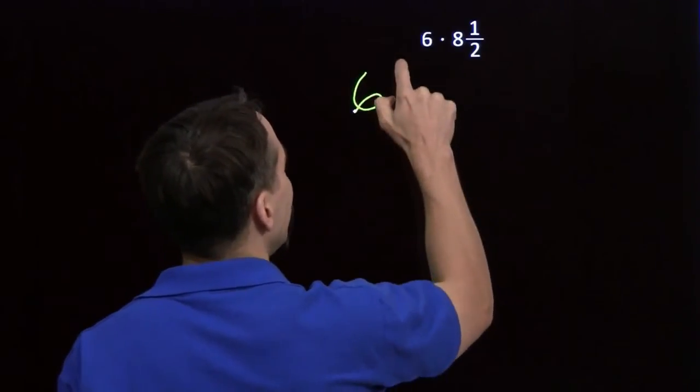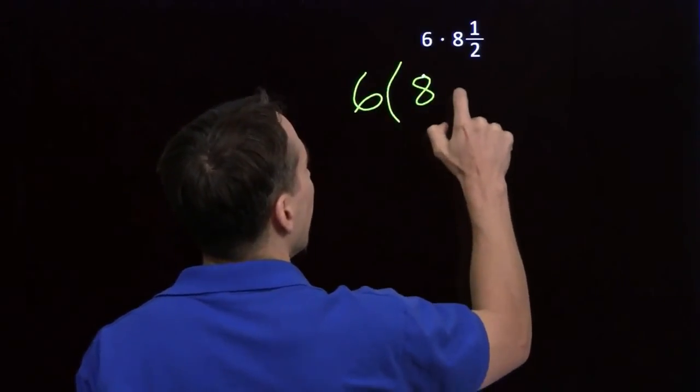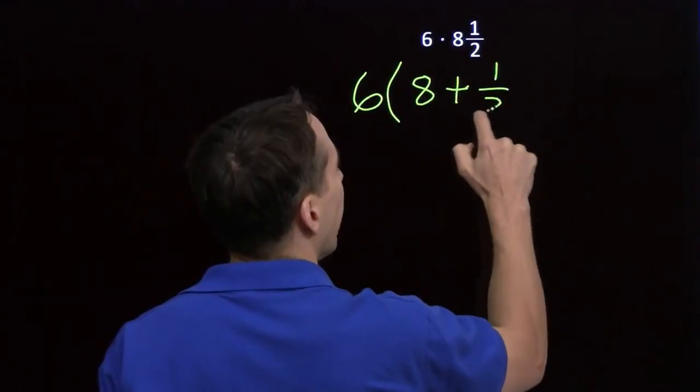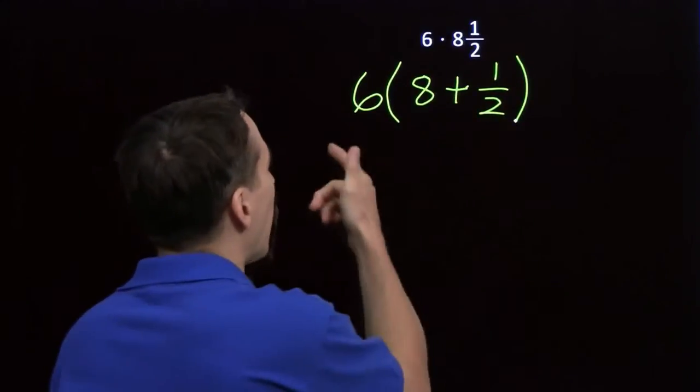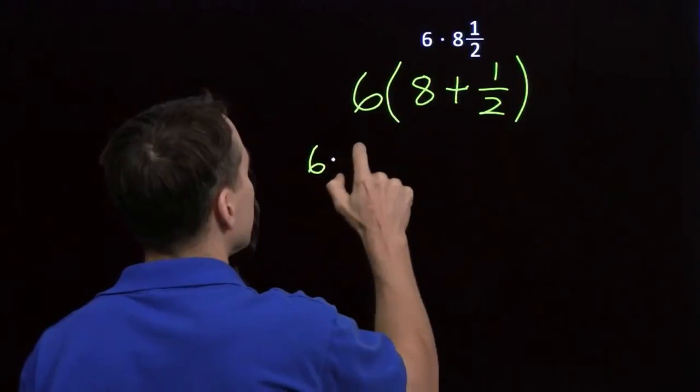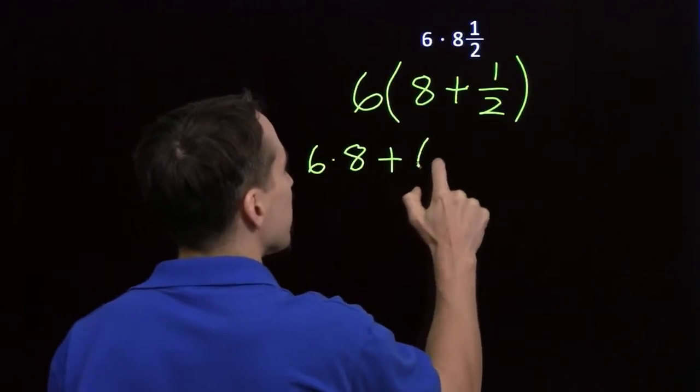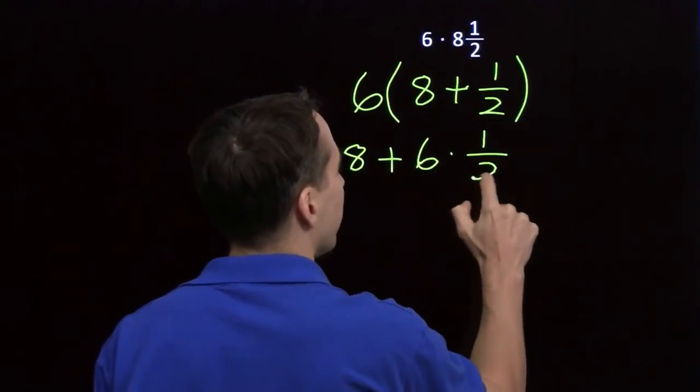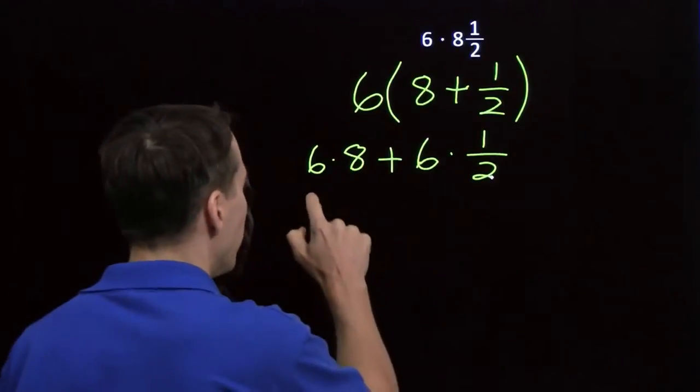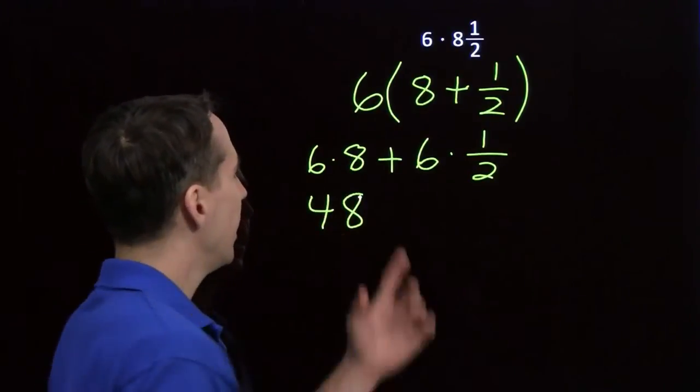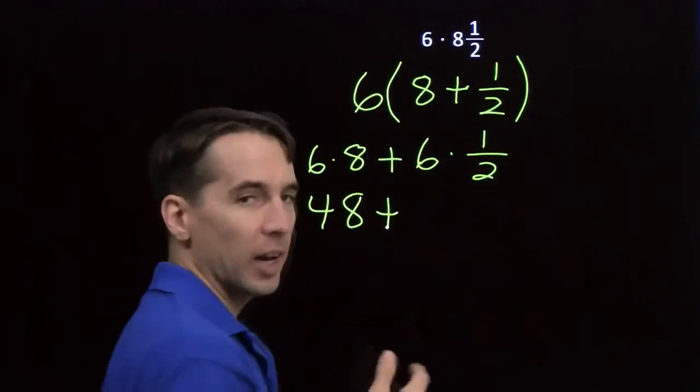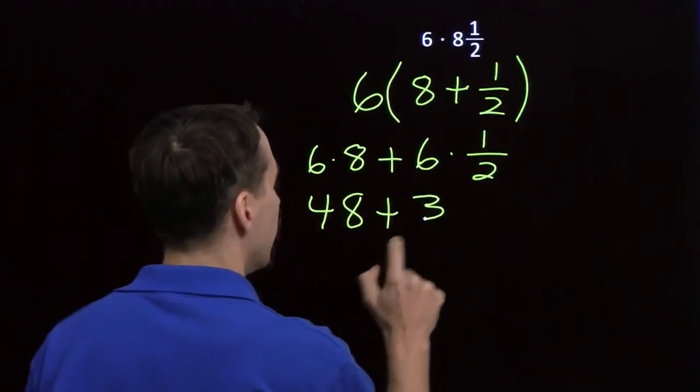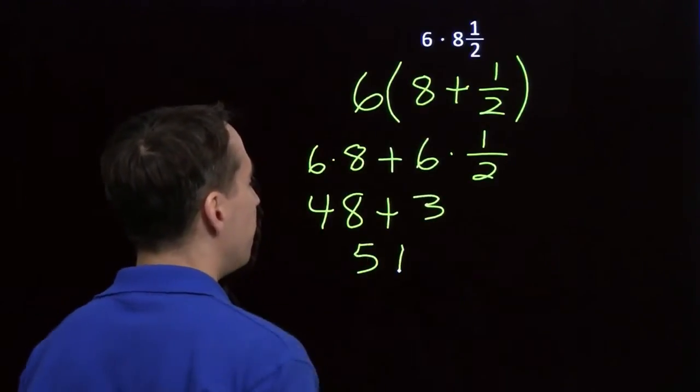We're going to take our 8½, we're going to write that as 8 plus ½. Now we can just use the distributive property. Break this up into 6 times 8 plus 6 times ½. 6 times 8, that's just 48. And 6 times ½, well, it's 6 divided by 2, that's just 3. And that gives us 51.